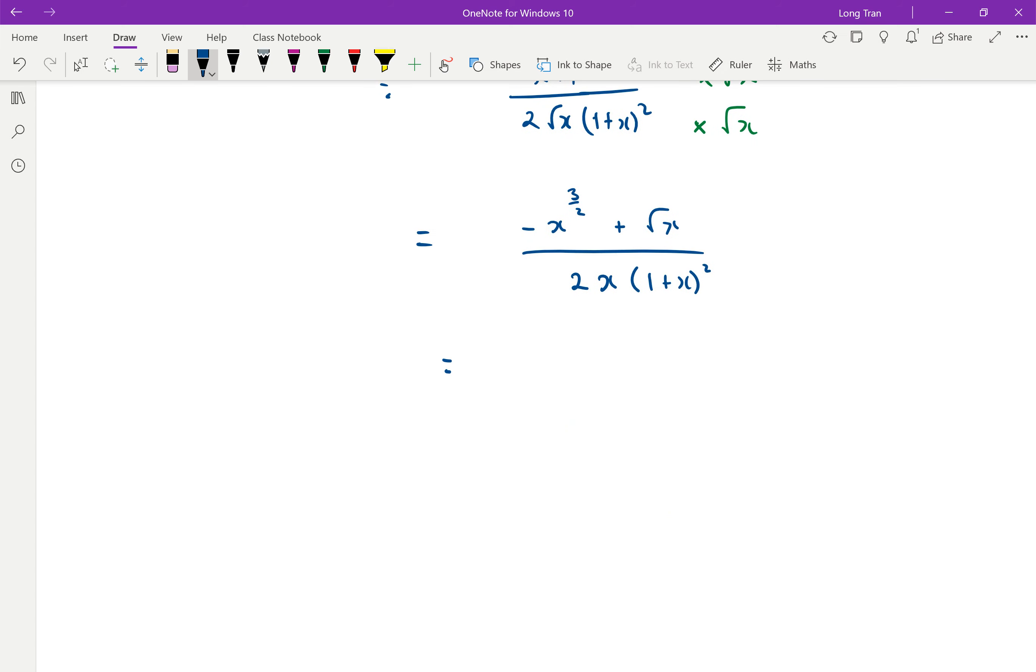And then I guess you can divide each term by x. So minus 1 gives you negative x to the power of half. This is already half. So x to the power of half divided by x again. So half minus 1 is x to the power of negative half all over 2 bracket 1 plus x squared. Is that what they got?